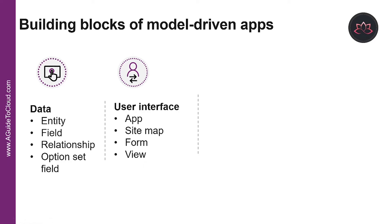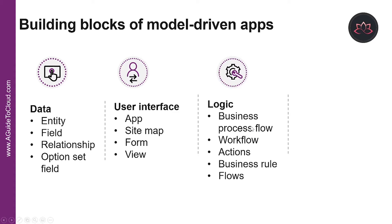The third building block is called Logical. The logic components determine what business processes, rules, and automation the app will have. The first is Business Process Flow, which walks users through a standard business process — for example, handling customer service requests the same way, or requiring staff to gain approval for an invoice before submitting an order. The second is Workflow, which automates business processes without a user interface. Designers use workflows to initiate automation that does not require any user interaction.